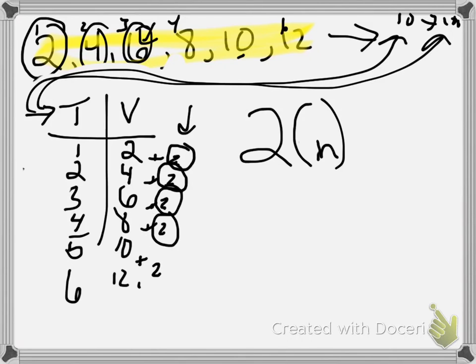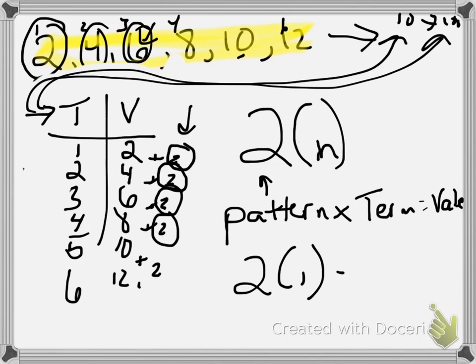Now in order to tell whether or not I have the proper pattern rule, is I have to look at my pattern times the term number and does it equal the value. So if I write this out, this should say pattern times the term equals the value. If I have a pattern of 2 and I multiply it by 1, so 2 times 1, I get a value of 2.